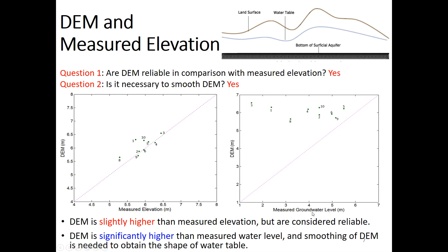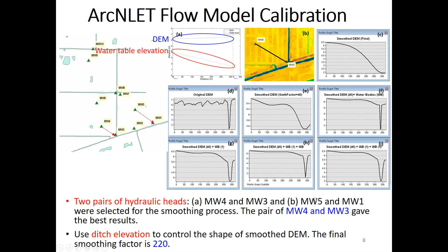The DEM is higher than the measured groundwater level, indicating it's necessary to process the DEM so the smoothed DEM can represent the shape of the groundwater table. When we do the smoothing, the smoothed DEM meets the canal data, so we chose two pairs of hydraulic head for calibration — essentially water flows from well MW4 to MW3, and from well MW5 to MW1.